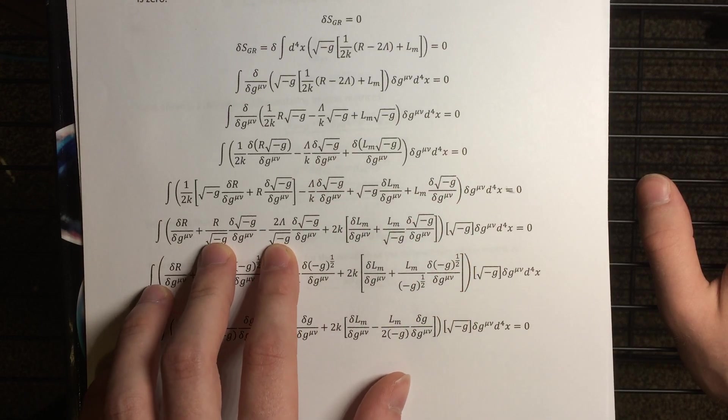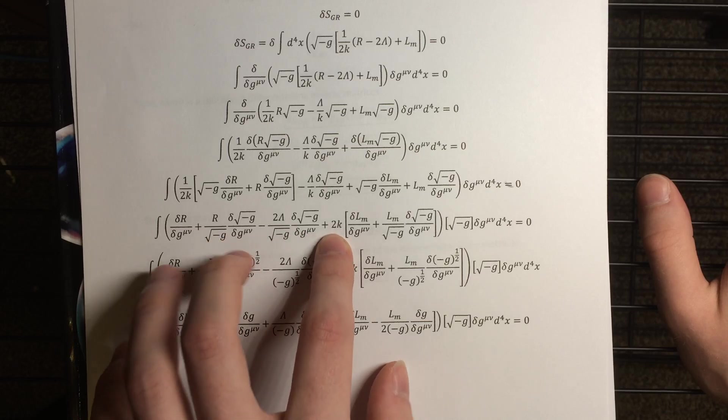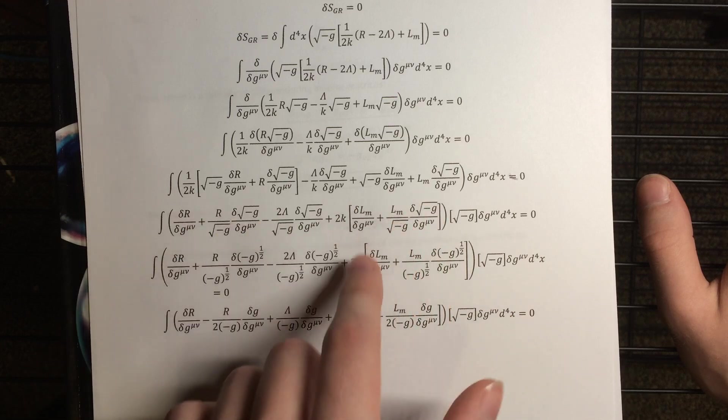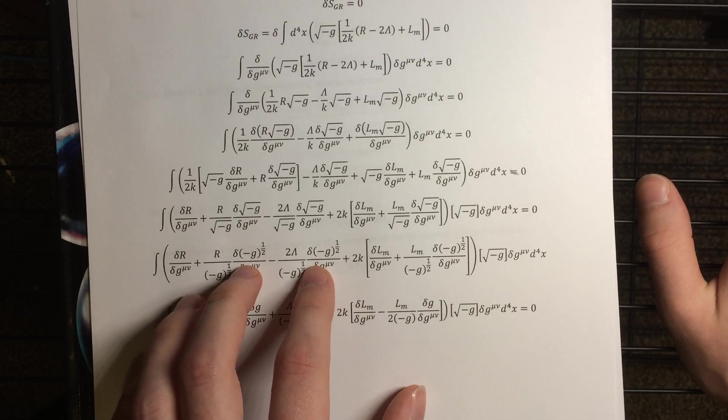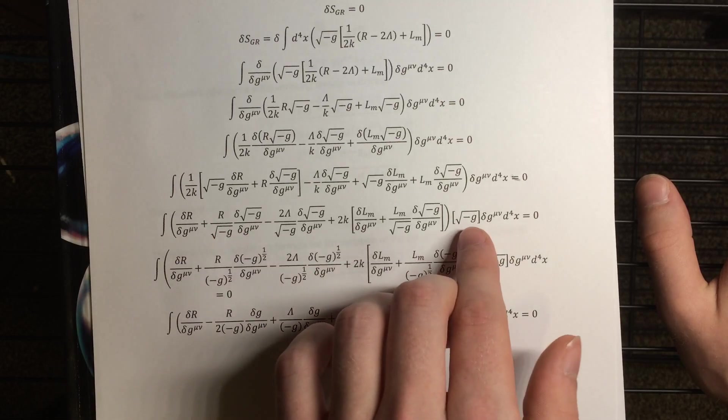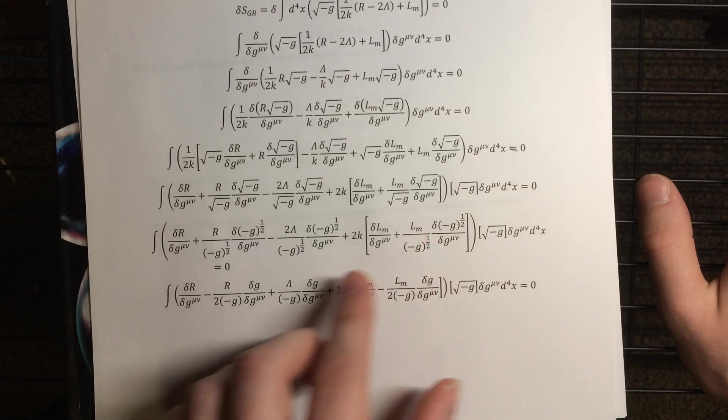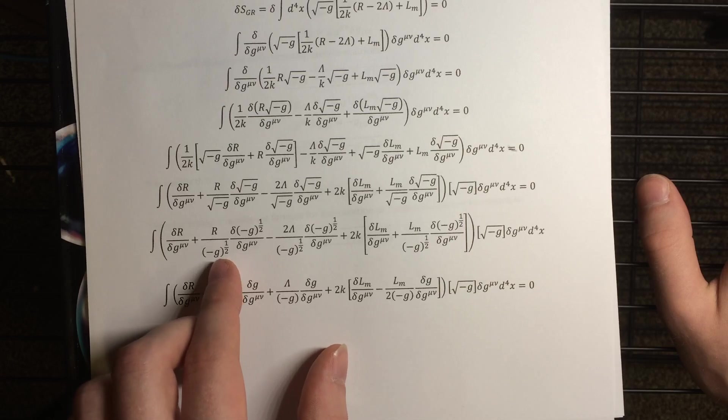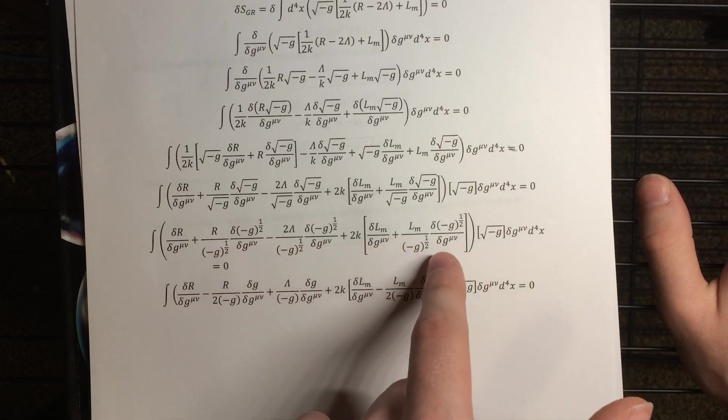The next thing I did over here was I first multiplied everything by 2k, so that the 2k ended up on this term here instead of on those. And the second thing that I did was I factored out a factor of root negative g. So then after that it proves convenient to write the square roots as exponents, so that we can use the chain rule conveniently to take these variations, or at least take them partly.